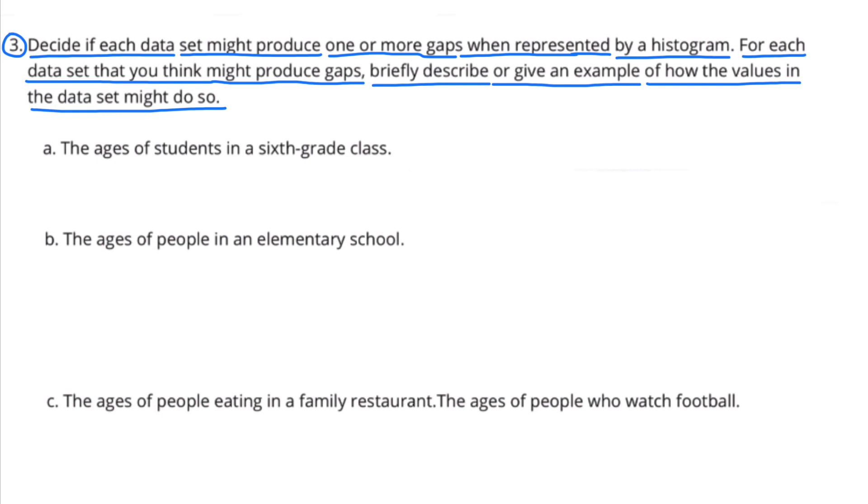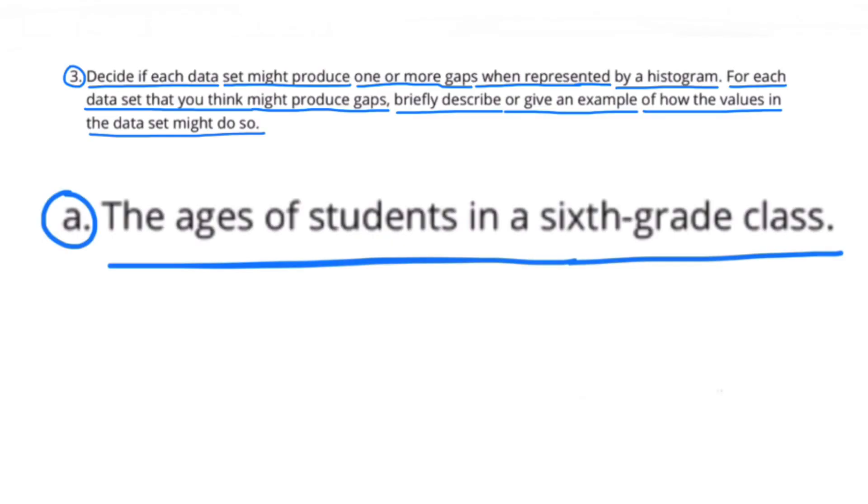Number 3. Decide if each data set might produce one or more gaps when represented by a histogram. For each data set that you think might produce gaps, briefly describe or give an example of how the values in the data set might do so. Since the ages of students in a 6th grade class are all very similar, there would be no gaps.